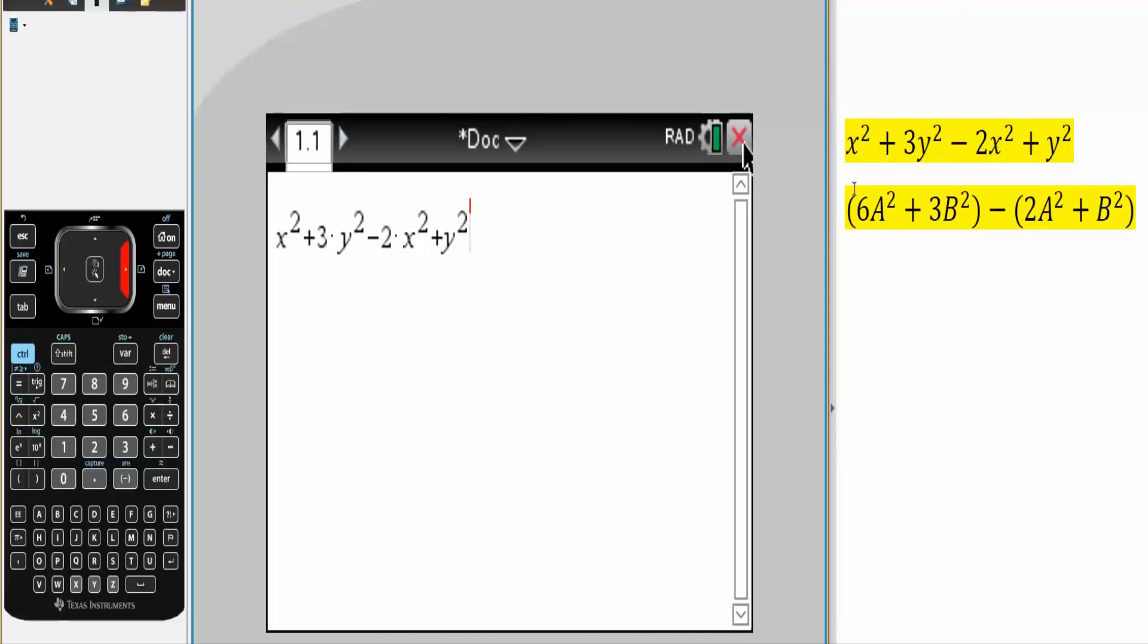Just in between, like the 2x squared, we put a multiplication sign. We hit enter, and that is the final answer to the first problem.